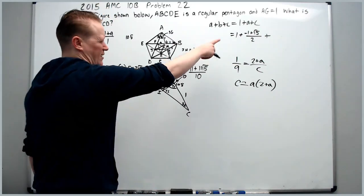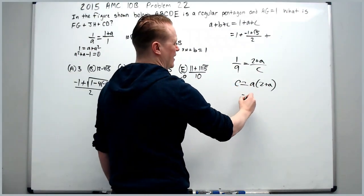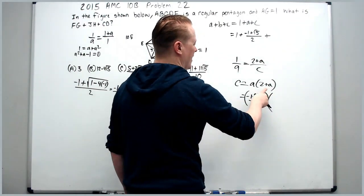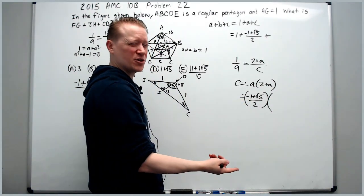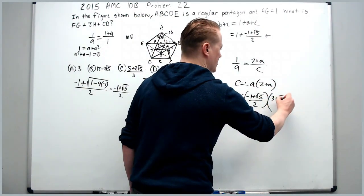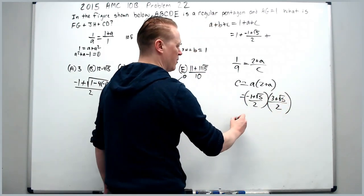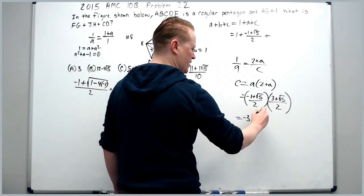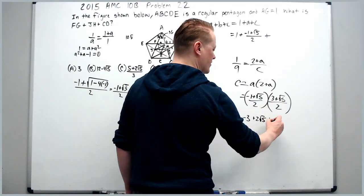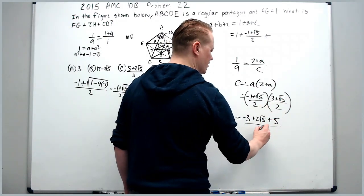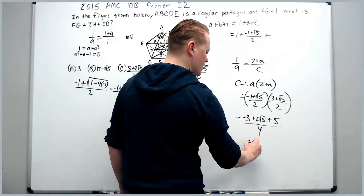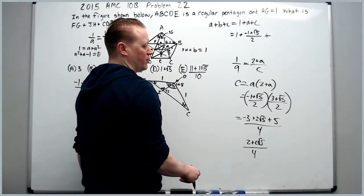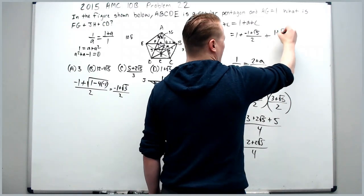We cross multiply C times one is C and we get A times two plus A. Now you can distribute, but actually, because A is kind of funky, I think I just want to leave it like this, negative one plus root five over two. How do I add two to this? I'm adding four over two, which is going to give us three plus root five over two. Multiply now, negative one times is negative three minus root five plus three root five is plus two root five and root five times root five is plus five all over four. Negative three plus five is two plus two root five over four. And now we can divide to get one plus root five over two, which actually is the golden ratio.